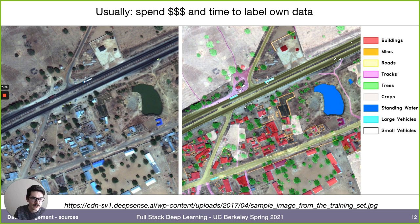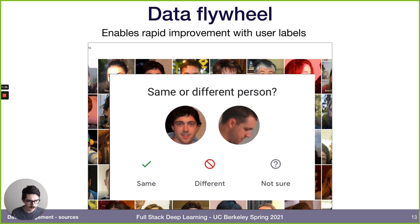The data flywheel is an interesting concept: if you can get your model out in front of users and develop your product so users contribute good data back or clean your model predictions, that enables really rapid improvement after you get a V1 model out there.